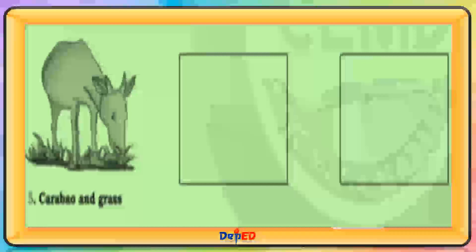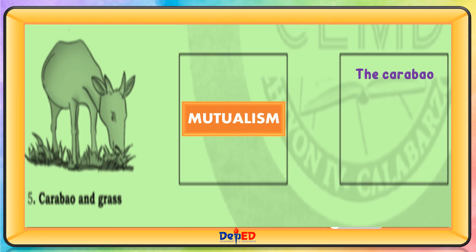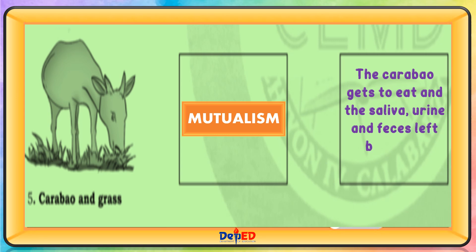Carabao and grass — this is mutualism. The carabao gets to eat, and the saliva, urine, and feces it leaves behind act as fertilizer.